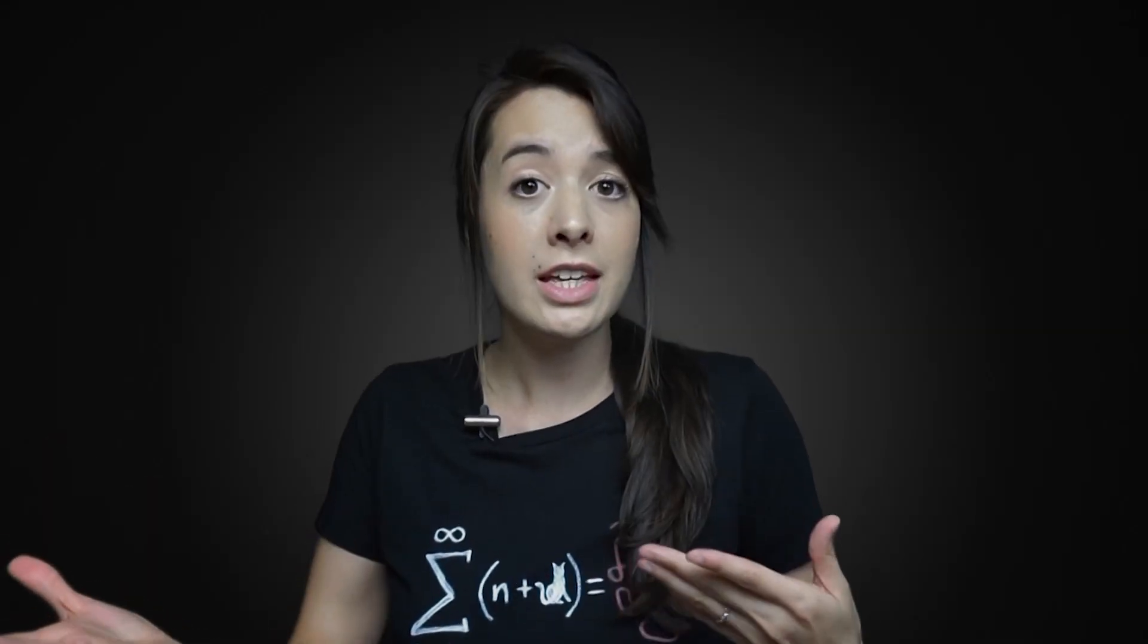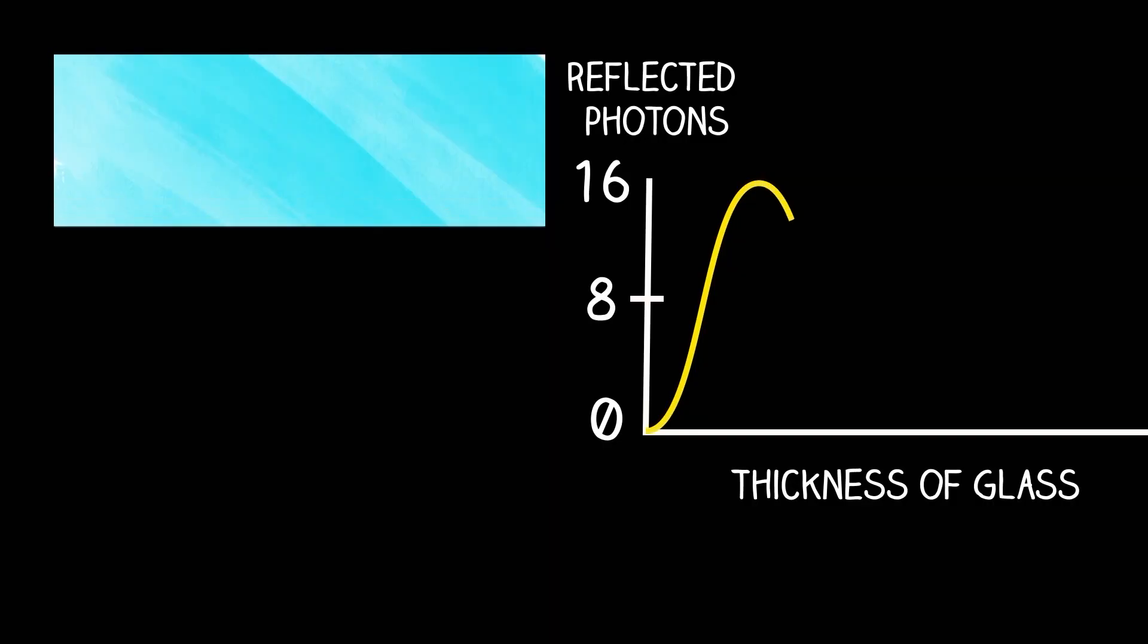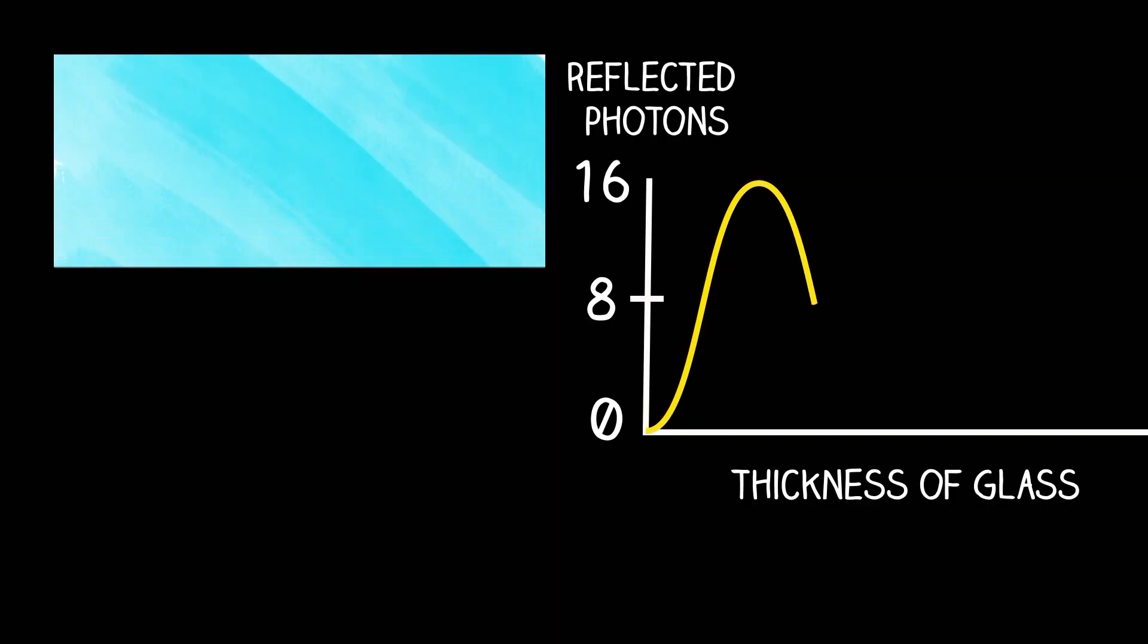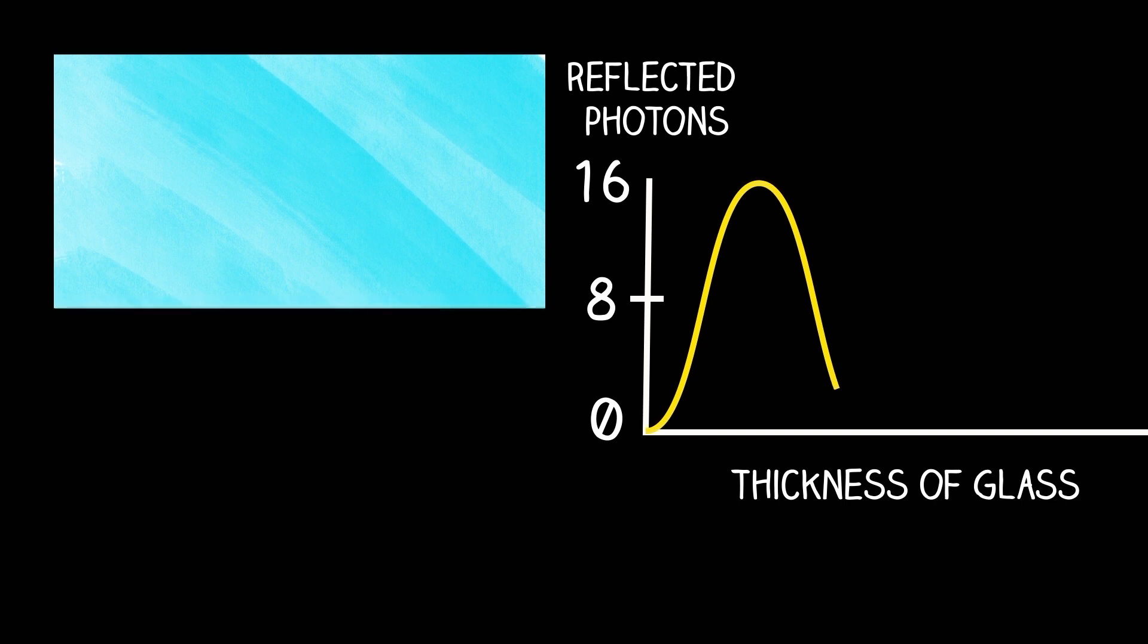You might be thinking, okay, that's a bit strange, but there's a pretty clear relationship: the thicker the glass, the more photons are reflected. But no. As they increased the thickness of the glass again, the number of reflected photons went back down, eventually getting back to zero.